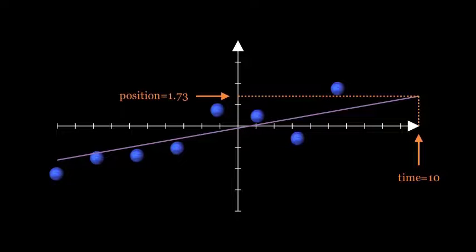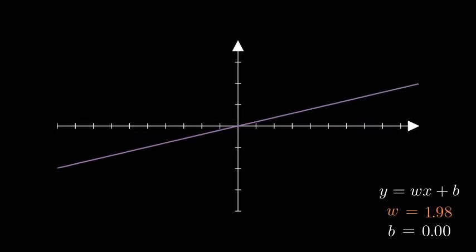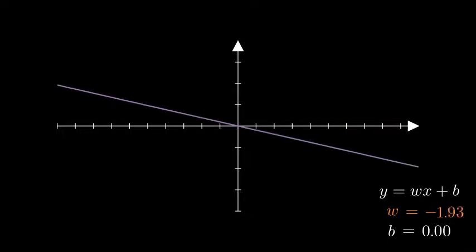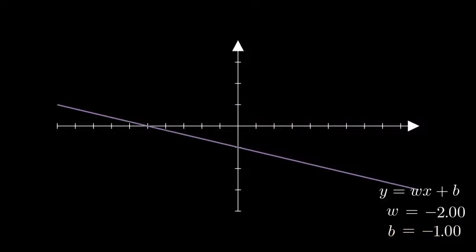So, how do we actually go about fitting a line to a set of points? Well, a straight line is described by two parameters. Its slope, which I'll call w, and its y-intercept, which I'll call b. By changing these two values, we can move and scale the line however we like, so we just need to find values which result in a good fit to the points.